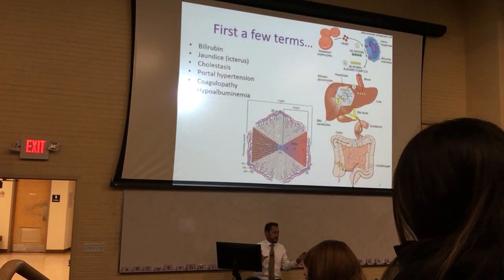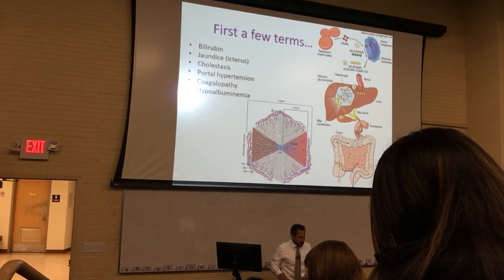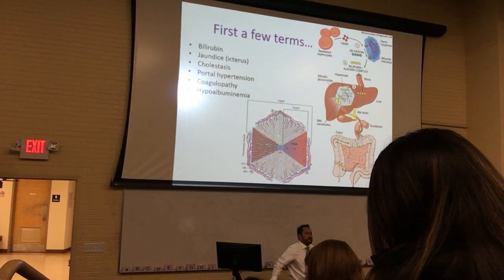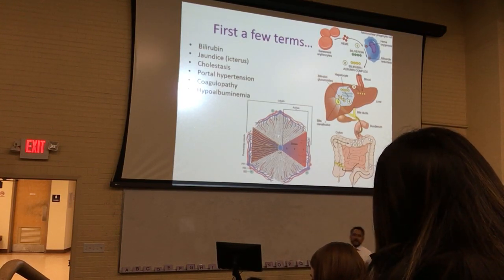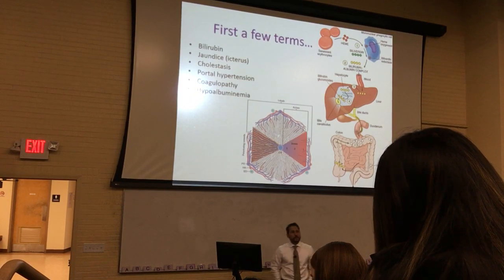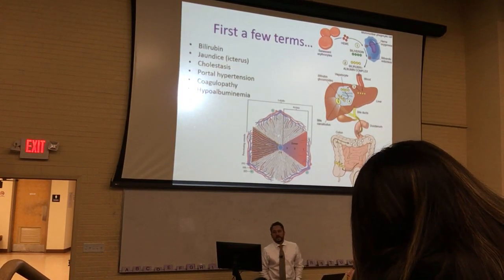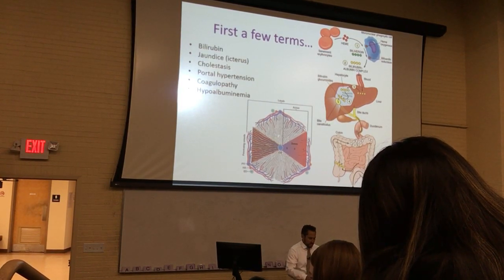So let's talk about some terms associated with the liver. Number one: bilirubin. Can anybody tell us what bilirubin is? — From the breakdown of heme. That's right, it's from the breakdown of heme. When we recycle our red blood cells, the liver is involved in that process. The heme group of the hemoglobin molecule contains iron, and a byproduct of that breakdown is bilirubin.